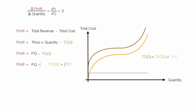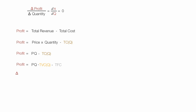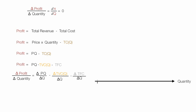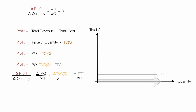I substitute that back in, making it negative because I'm subtracting it. So I take the change in profit divided by the change in quantity: that equals the change in price times quantity divided by change in quantity, minus how total variable cost changes with quantity, minus how total fixed cost changes with quantity. Notice that total fixed cost doesn't change with quantity — it is fixed — so I can disregard that term; it equals zero.